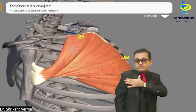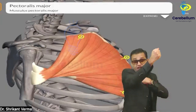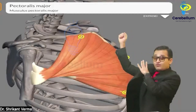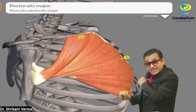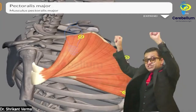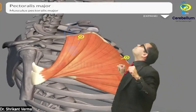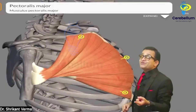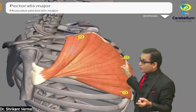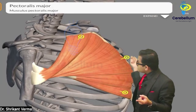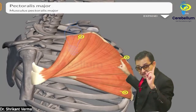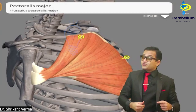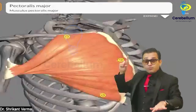Pectoral major is coming from the front, so when it contracts it will cause flexion. But if my arm is already flexed, when this muscle contracts it will cause extension — and extension is helpful when climbing up. So extension is used during climbing activity. Remember: pectoral major is a flexor in the extended arm and an extensor in the flexed arm. So it is called the climber muscle.